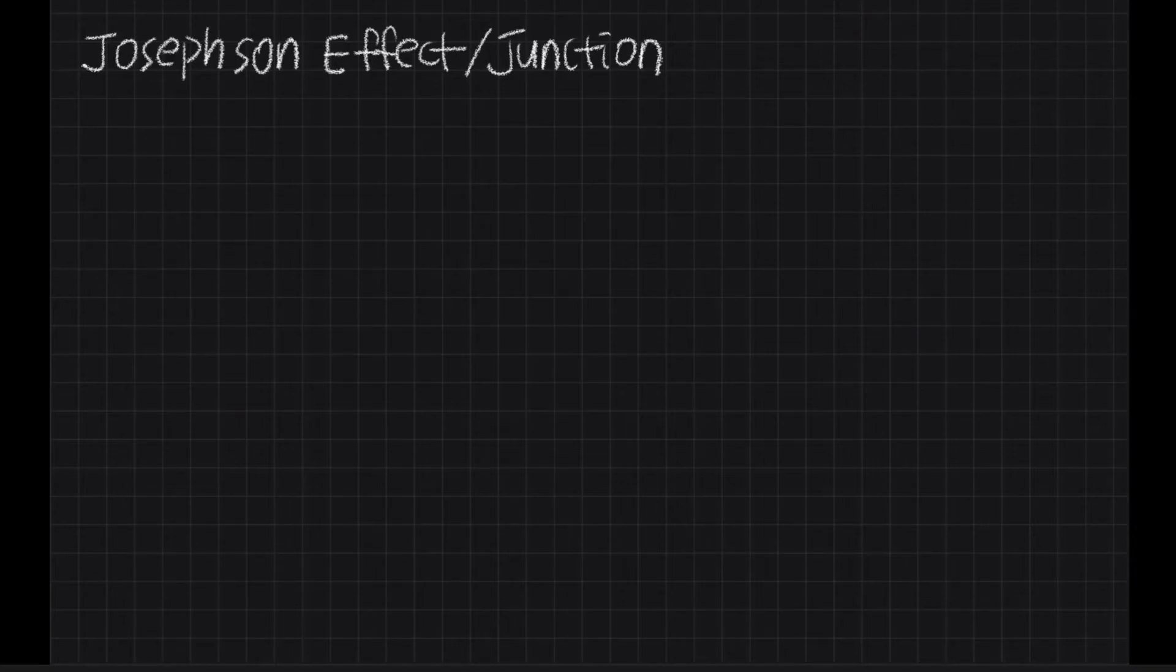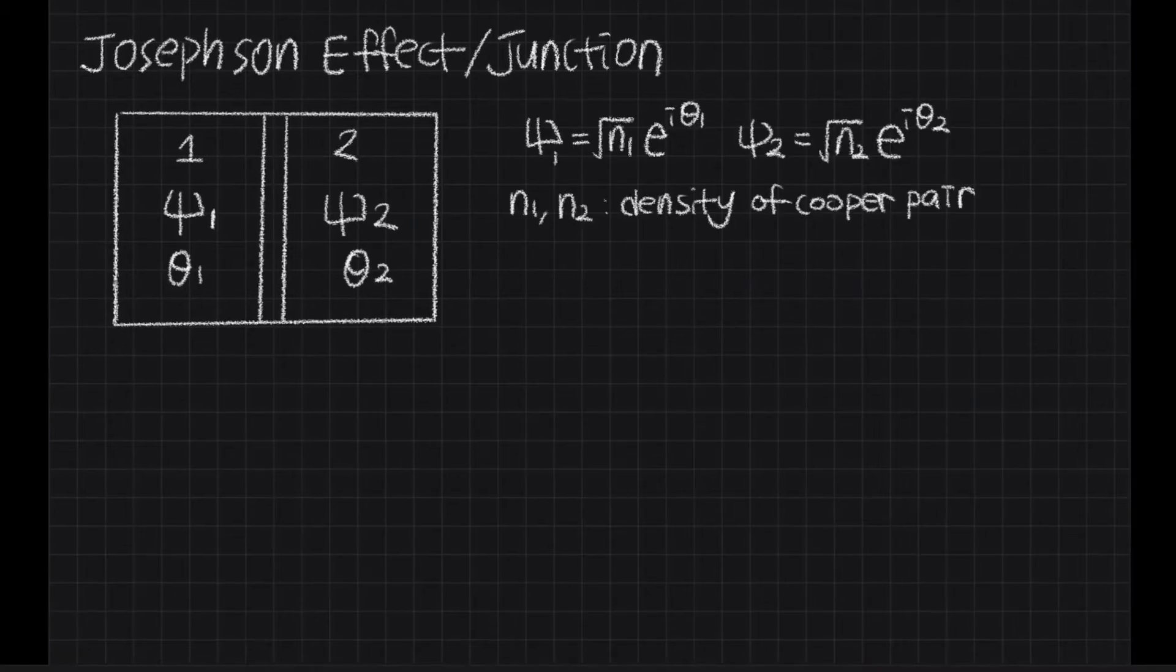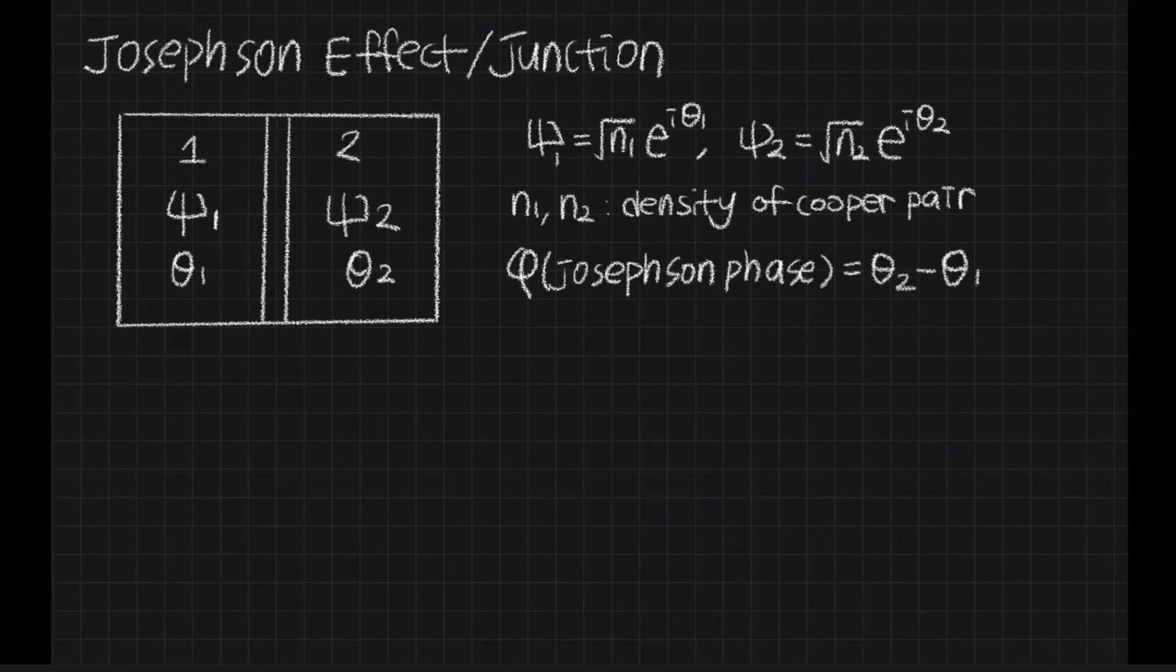The current through the junction is related to the phase difference of wave function on each side. The wave function of the particles in both superconductors is as follows. And the phase difference between junctions, Josephson phase, can be expressed like this. Using this, the Josephson relations are derived.